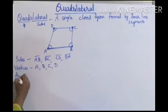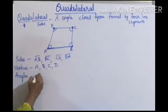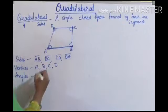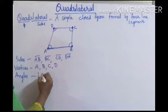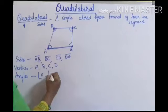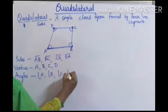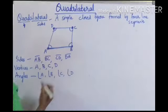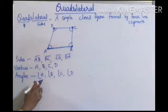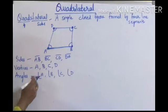Next, coming to angles — here you are having four angles: angle A, angle B, angle C, and angle D. You can represent them either with a single letter or with three letters.